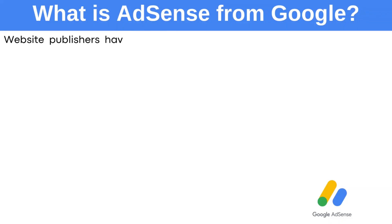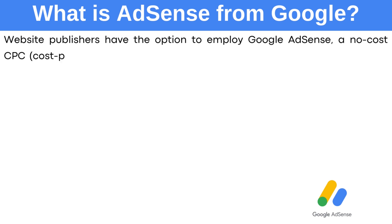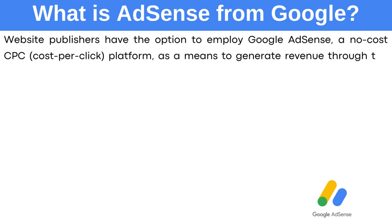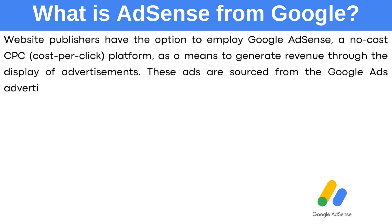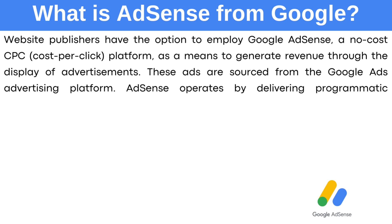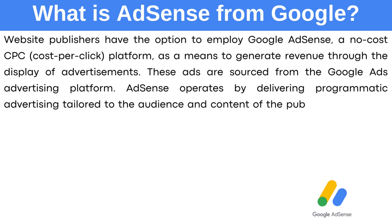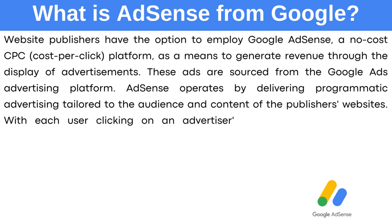What is Google AdSense? Website publishers have the option to employ Google AdSense, a no-cost CPC (cost-per-click) platform, as a means to generate revenue through the display of advertisements. These ads are sourced from the Google Ads advertising platform. AdSense operates by delivering programmatic advertising tailored to the audience and content of the publisher's website. With each user clicking on an advertiser's ad, the publisher receives compensation.